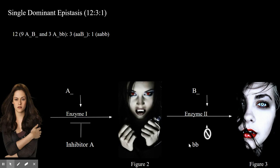If there is a big B allele then the vampire will have blue eyes. However if the genotype is little b little b then they will have red eyes because they cannot go through enzyme 2.